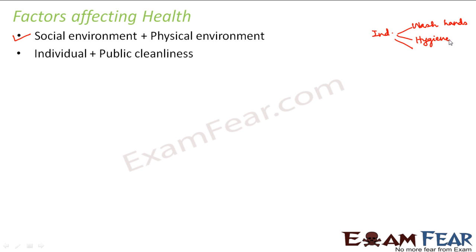Where can we maintain hygiene in our individual life? For example, we should try to keep our house neat and clean, keep the kitchen very neat, and keep whatever we cook covered so that insects or something else doesn't fall into them. We should maintain that kind of hygiene at home. We should also clean ourselves properly — take bath regularly and wash our body properly so that our body is neat and clean. These are some of the small things we can take care of for individual cleanliness.